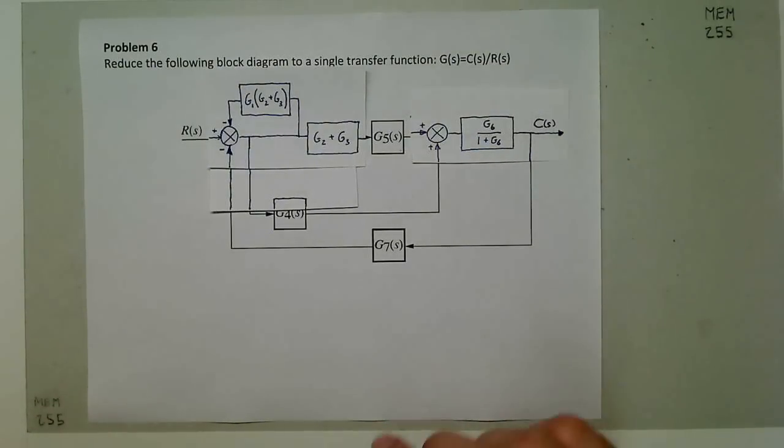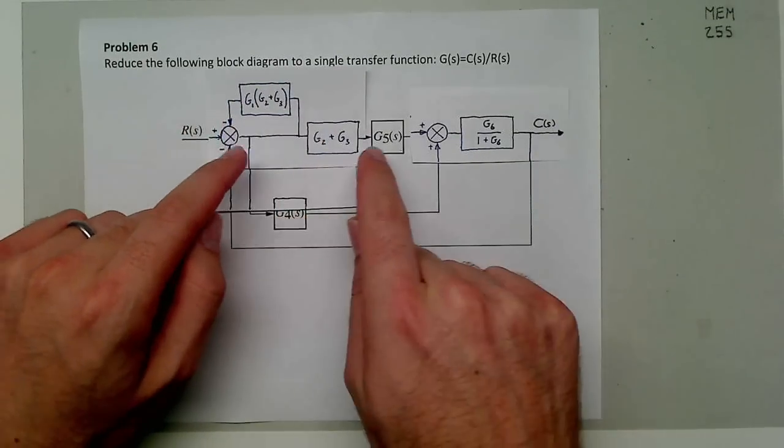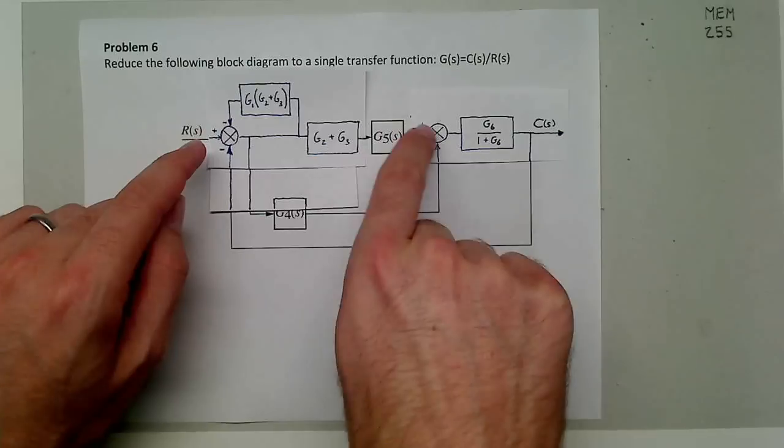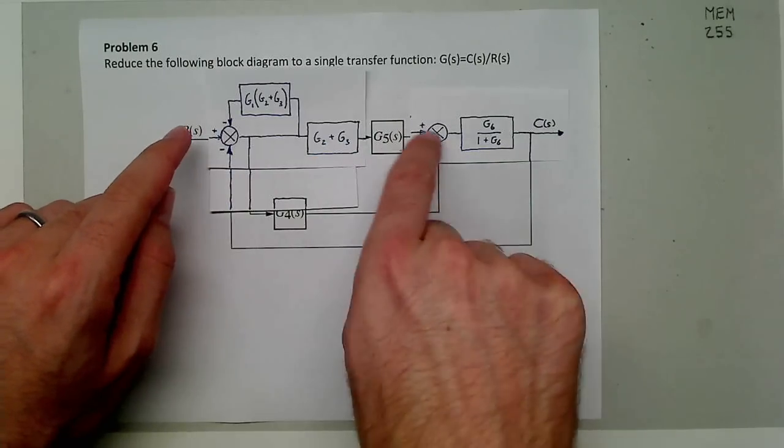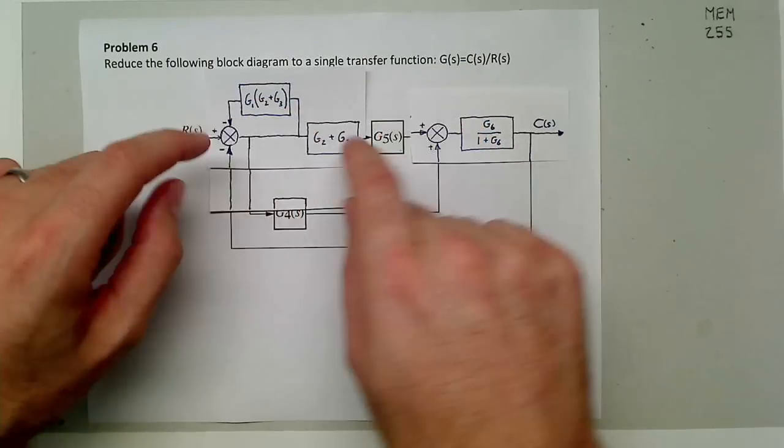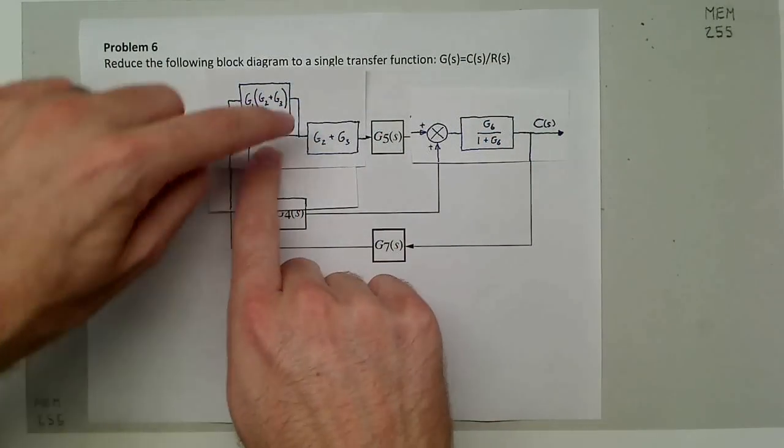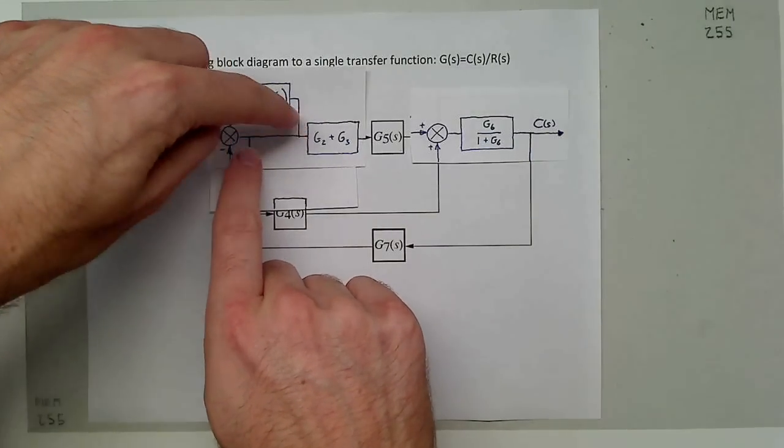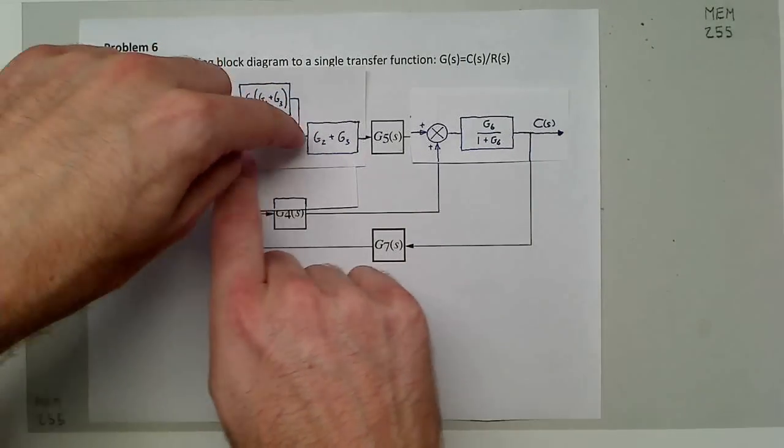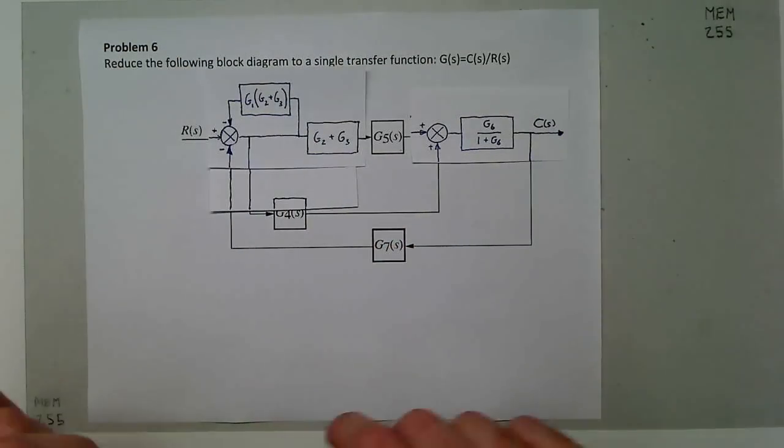The purpose of doing that is that now we have this simple feedback loop here, and these two forward paths to this summer are actually in parallel. Now we can apply the summing rule here and the feedback rule here. The location of these two nodes is not important—we can redraw it any way we want as long as they're all in the same nodes.